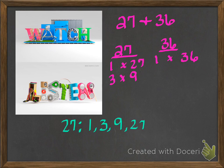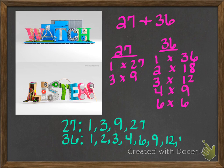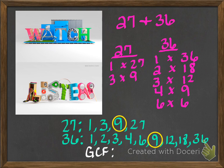Now I'm going to do the same thing with 36. I know that 1 times 36 gives me 36, 2 times 18 gives me 36, 3 times 12 gives me 36, 4 times 9 gives me 36. 5 times nothing will give you 36. And 6 times 6 gives you 36. So listing them in order: 1, 2, 3, 4, 6, 9, 12, 18, and 36. Now I'm going to compare my two rows of numbers and find the largest number that they have in common — the largest number that is the same. In this case it happens to be 9. So my GCF for the numbers 27 and 36 is 9.